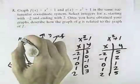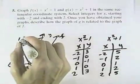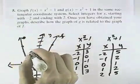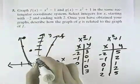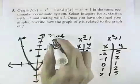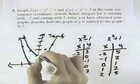So we have negative 2, 5, negative 1, 2, 0, 1, 1, 2, and 2, 5 for our graph of g.